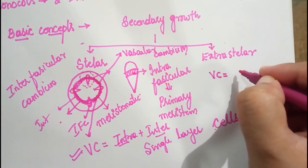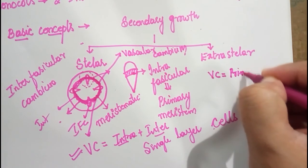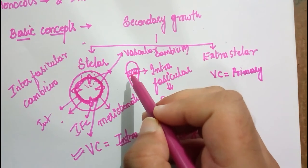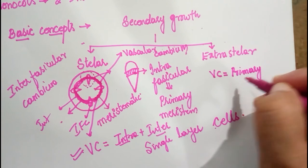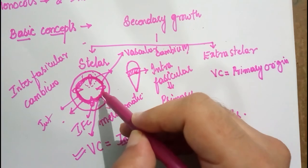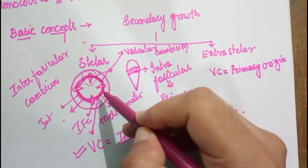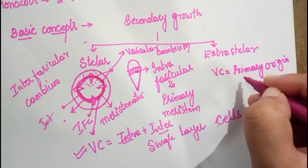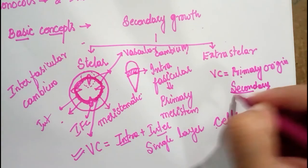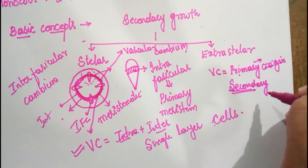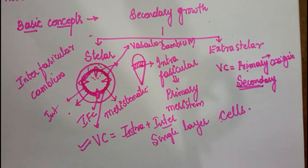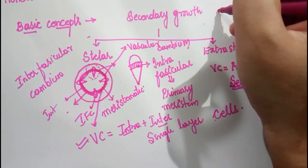The vascular cambium ring contains both primary and secondary meristem. The intrafascicular cambium part is primary in origin, so that part is a primary meristem. The interfascicular cambium is formed by de-differentiation, so it is a secondary meristem. So part of the vascular cambium is primary and part is secondary. This completes part one of the video.